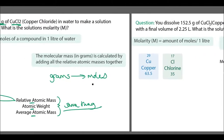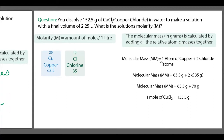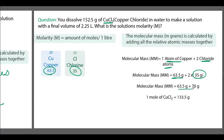The molecular mass in grams is calculated by adding all the relative atomic masses together. For copper chloride, we have one atom of copper and two atoms of chlorine, as shown by the formula CuCl₂. So the molecular mass is 63.5 g plus two times 35 g, which equals 63.5 plus 70 grams — giving us 133.5 grams.